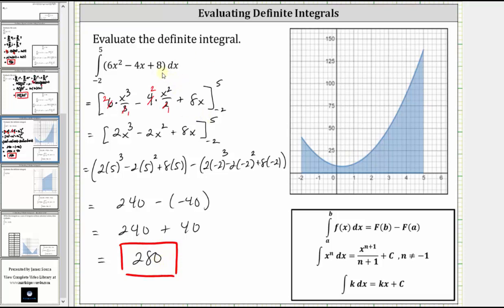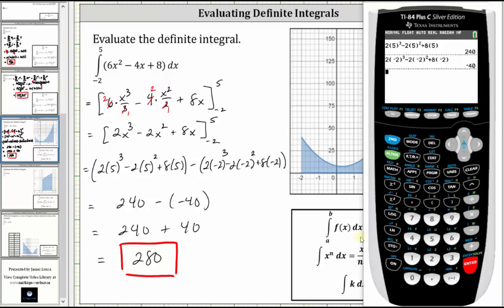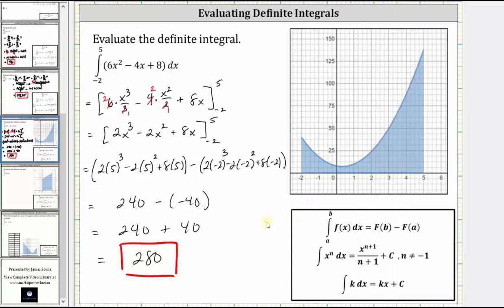Let's also verify this result using the definite integration tool on the TI-84. We press math, option 9 for function integration. Lower limit of integration is negative 2, right arrow, upper limit is 5, right arrow. Enter the integrand function of 6x² minus 4x plus 8, right arrow, enter x for differential x, and then press enter. And we do get the value of 280, verifying our work is correct. I hope you found this helpful.